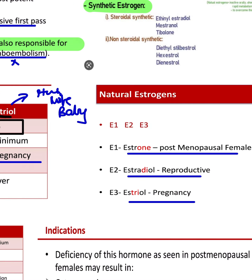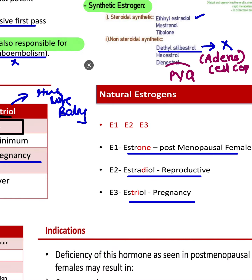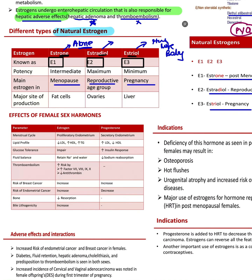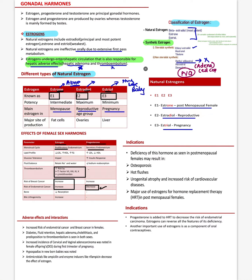Synthetic estrogens: ethinyl estradiol is most commonly used in Mala-N and Mala-D. Non-steroidal estrogen diethylstilbestrol (DES) has been banned because it causes clear cell adenocarcinoma — a frequently repeated question. Estrogen proliferates the endometrium; progesterone maintains it in secretory phase. Estrogen has a risk of thromboembolism, and increases risk of breast and endometrial cancer. Progesterone decreases these risks.